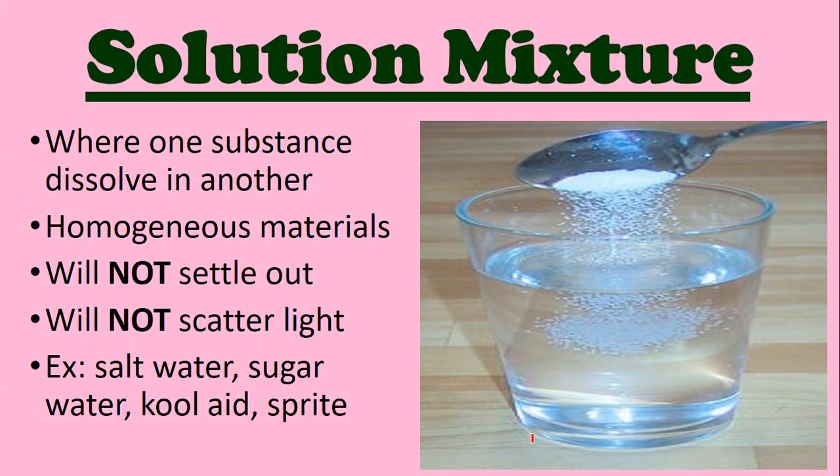A solution mixture is when one substance dissolves in another completely, so it's a homogeneous mixture — they look like one thing. The particles will not settle out, and the solution will not scatter light. Examples include salt water, when you dissolve salt in water it creates a solution; sugar water, Kool-Aid, and Sprite — all of these are homogeneous.